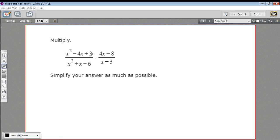I think the first thing to do is to factor wherever we can to see if there are terms that can cancel. So if I look at the top of this rational expression I see a quadratic and it looks like I can factor that, so let's go ahead and do that.